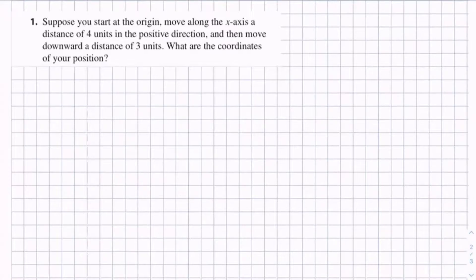We have: suppose you start at the origin, move along the x-axis a distance of 4 units in the positive direction, and then move downward a distance of 3 units. What are the coordinates of your position?